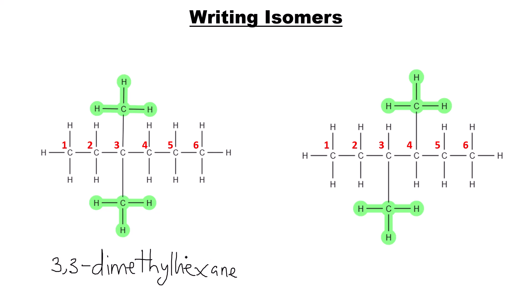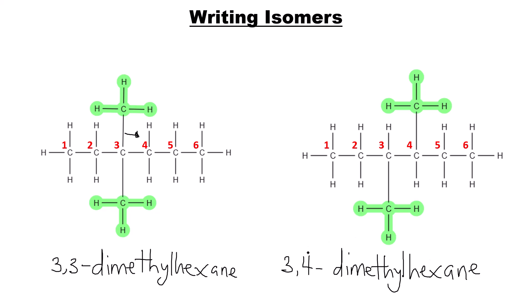From 3,3-dimethylhexane, we can shift the top methyl group from carbon three to carbon four, giving a completely different isomer: 3,4-dimethylhexane.